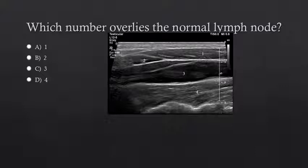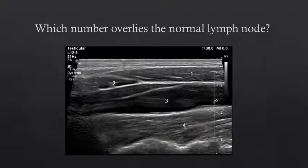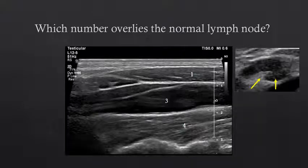Now orient yourself to this image and decide which number overlies the normal lymph node. Number one overlies a muscle. Number two overlies a small lymph node with an outer hypoechoic cortex and an echogenic fatty hilum. Number three overlies a vessel, and number four overlies a muscle deep to that vessel. When we look more closely, we can see that central echogenic fatty hilum with the smooth hypoechoic cortex. For comparison, here's another lymph node with an echogenic fatty hilum and smooth hypoechoic cortex.